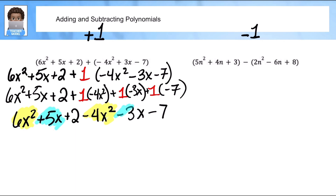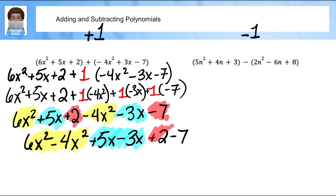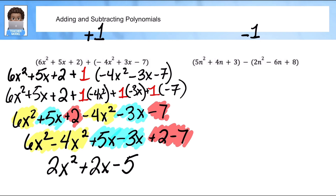At this point we're experts, so we know what like terms look like. I like to rewrite them so I can put them together. However, if you can see them in your mind and start recognizing that you can add or subtract, go ahead — but if you find you're making mistakes, go back to writing it out. Let me color-code them so you can see exactly how I'm combining the terms. I'm combining the first set: six minus four is two x squared, five minus three is two x, and two minus seven is negative five.